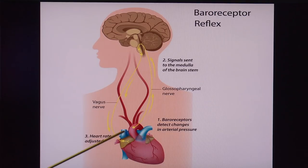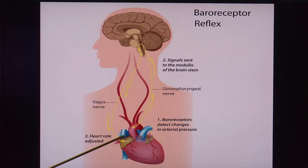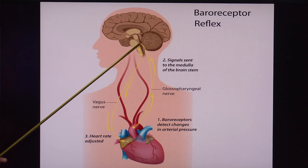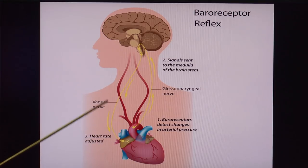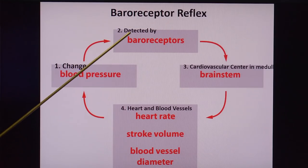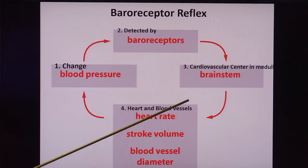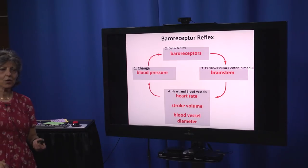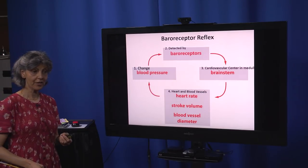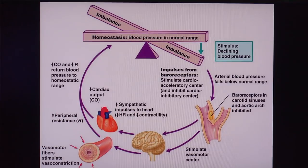Baroreceptors will start a reflex if there is abnormal blood pressure. The receptors send neural information to the medulla oblongata, and the medulla sends information back to the heart and blood vessels. This change in blood pressure detected by baroreceptors goes to the medulla, which then sends information back to change those parameters. It is a very fast neural circuit — it takes seconds, it is automatic, and the outcome is always predictable.